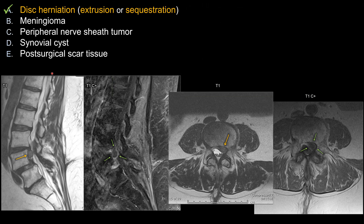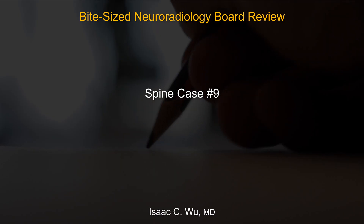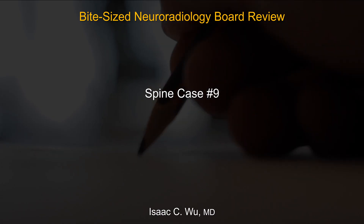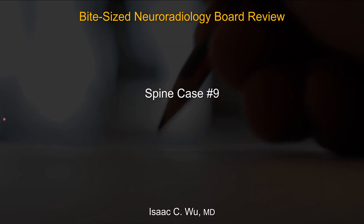For this case, the best choice is disc herniation — specifically sequestration or inferiorly migrated disc extrusion. That's all for spine case number 9. Thank you for your attention, and good luck on your board exam.